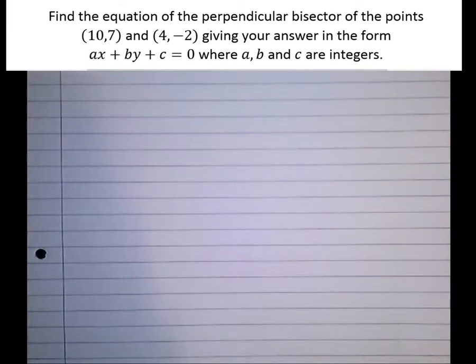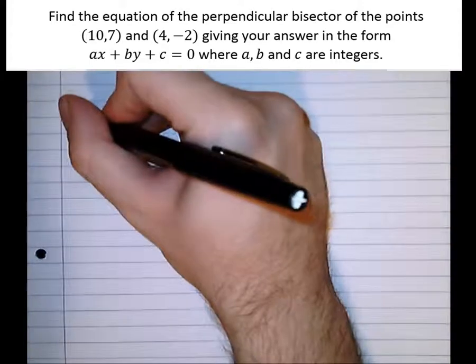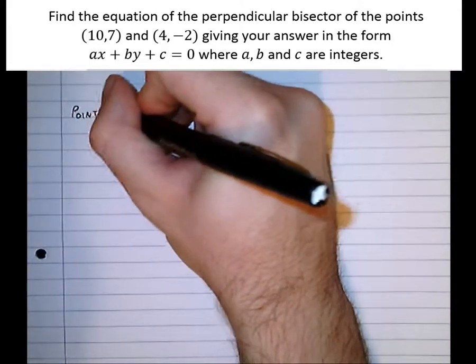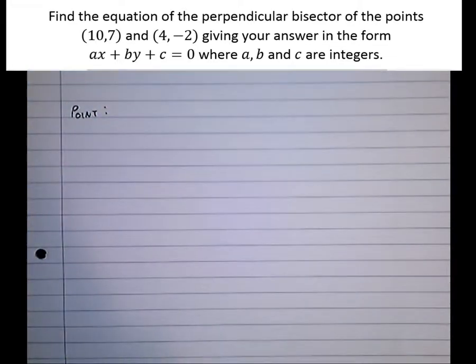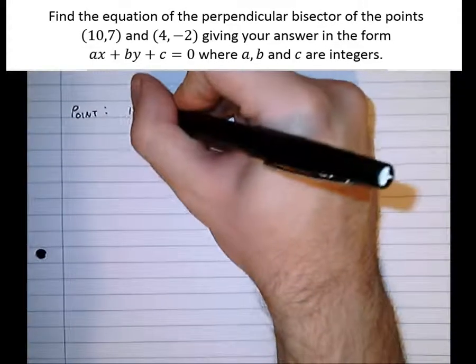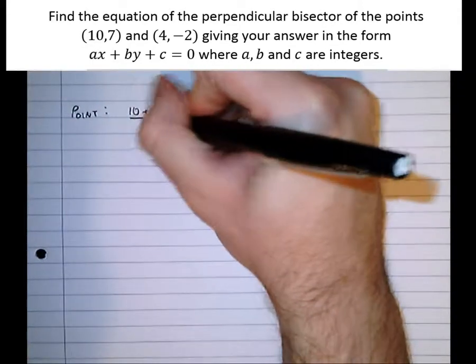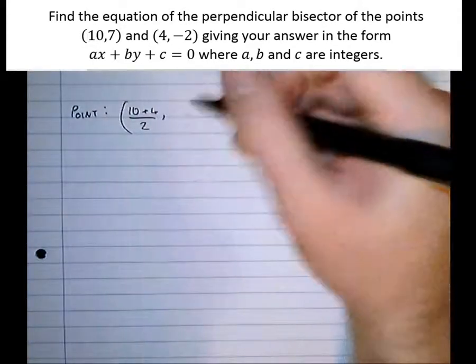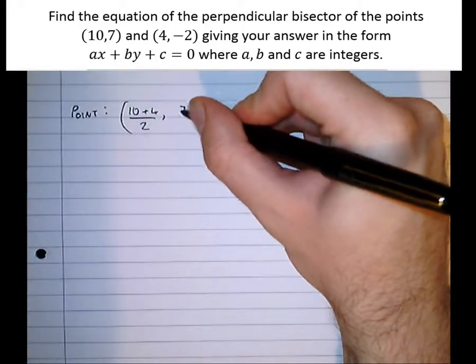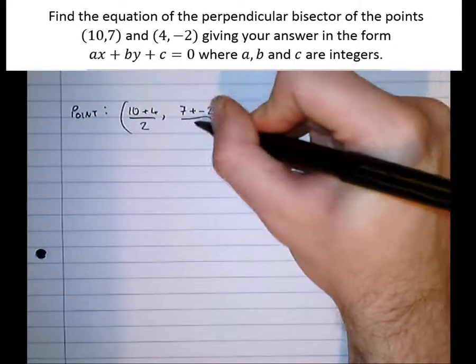So first of all, we need to find a point that this graph passes through. It passes halfway between the points (10,7) and (4,-2). So what we need first of all to get the point is the midpoint of (10,7) and (4,-2). We get the midpoint by finding the average, i.e., the middle of the x-coordinates and the middle of the y-coordinates. Add them together, divide by 2.